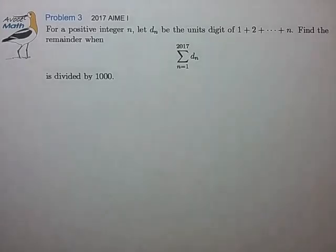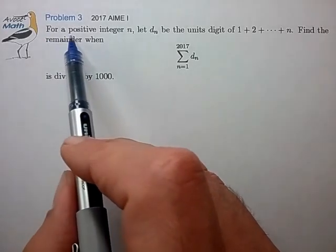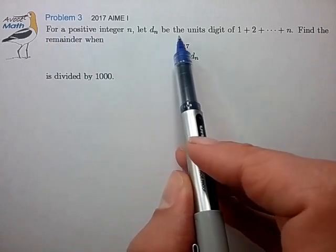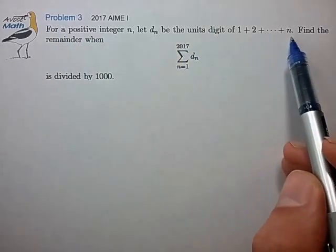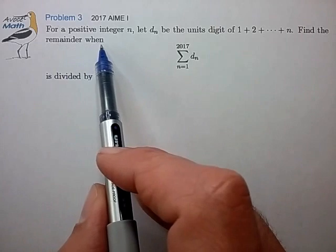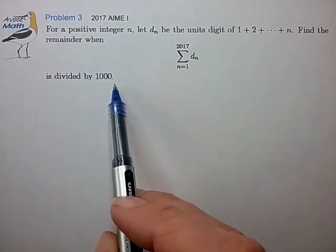Hi, this is problem 3 from the 2017 AIME. For positive integer n, let d_n be the units digit of the sum 1 plus 2 plus ... plus n. Find the remainder when the sum from n equals 1 to 2017 of d_n is divided by 1000.